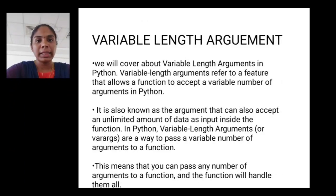Variable length arguments. We will cover variable length arguments in Python. Variable-length arguments refer to a feature that allows a function to accept a variable number of arguments in Python. It is also known as the argument that can also accept an unlimited amount of data as input inside the function. In Python, variable length arguments or varargs are a way to pass a variable number of arguments to a function. This means that you can pass any number of arguments to a function and the function will handle them all.